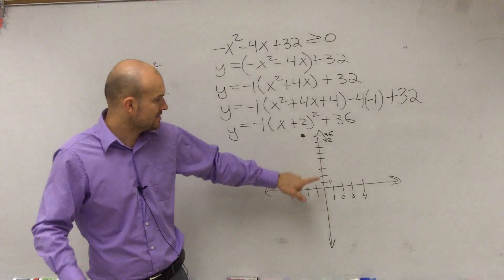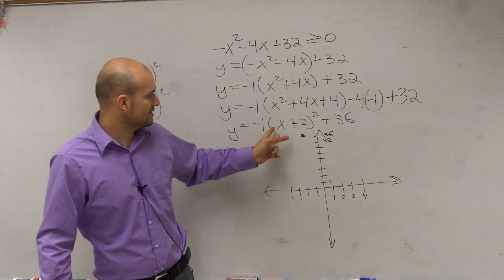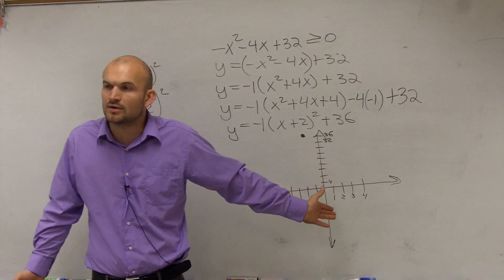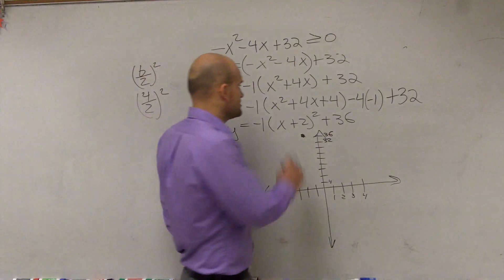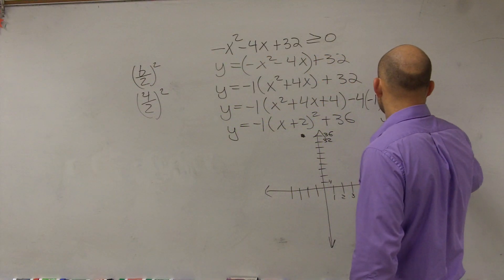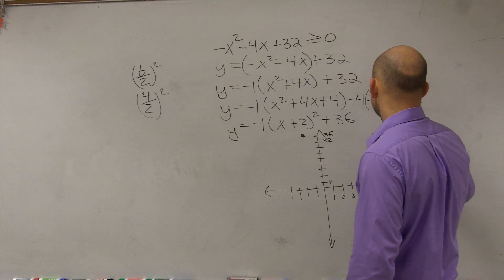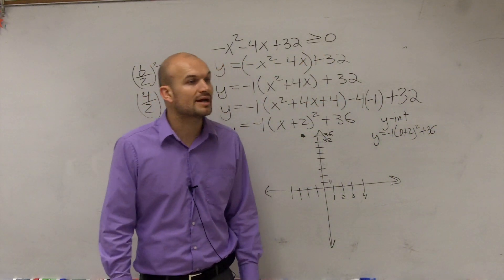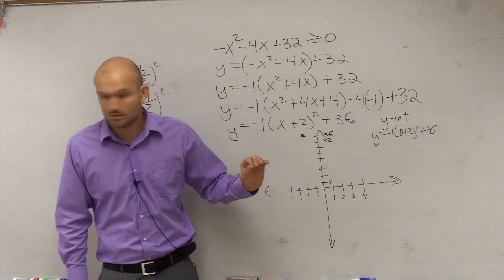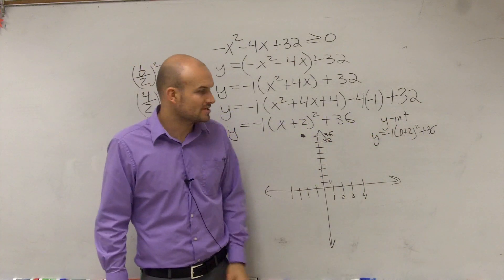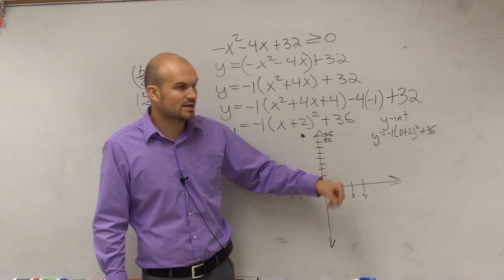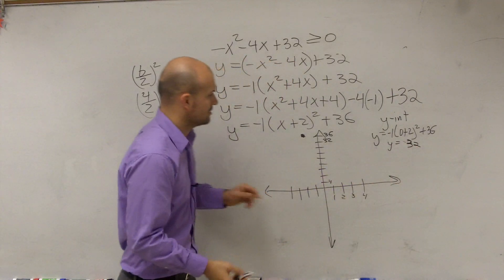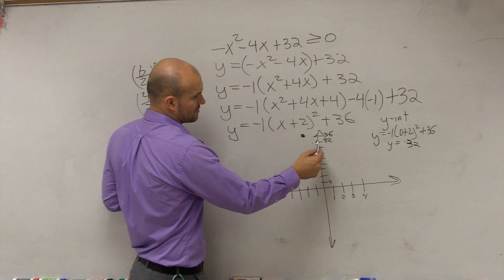Now, the best way I can describe it is, well, you can find other points. This one is going to be down 1 over 1. But it's going to be kind of hard to graph. What I would do is I'd find the y-intercept. We can find the y-intercept here. The y-intercept is when x equals 0. So the y-intercept, you're going to have y equals negative 1 times (0 plus 2) squared, plus 36. So 0 plus 2 is 2. 2 squared is 4. 4 times negative 1 is negative 4. Therefore, y equals positive 32. So therefore, my y-intercept is at 32.